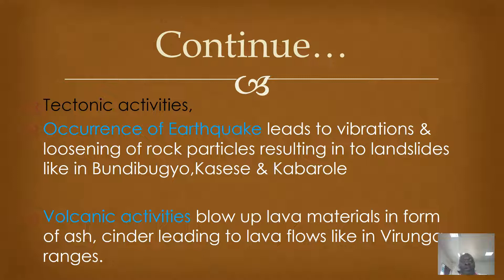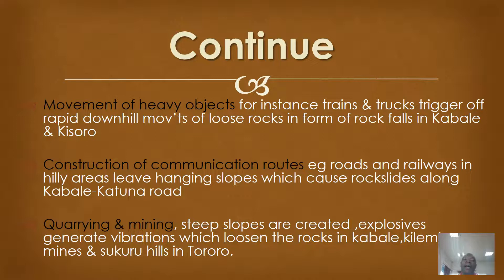Volcanic activities blow off lava materials in the form of ash and cinder. As a result, there are lava flows which move with rock particles downslope to cause mass wasting types such as rock falls, rock slides, and rock slumping. For example, in the Virunga ranges in south-western Uganda.